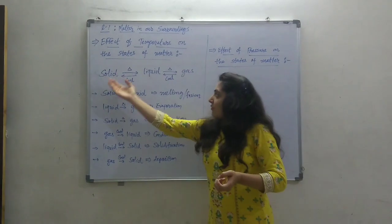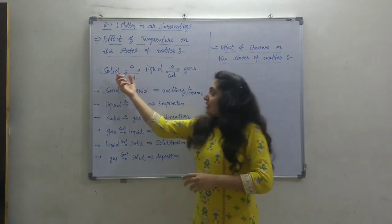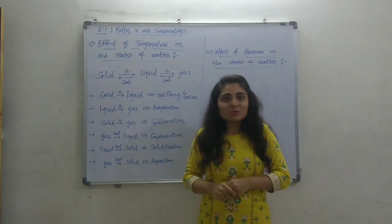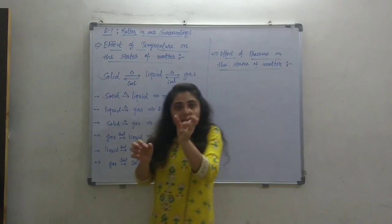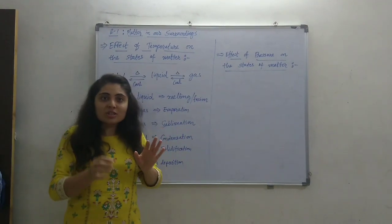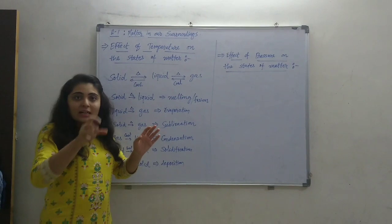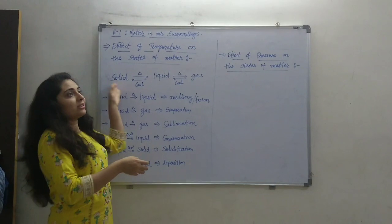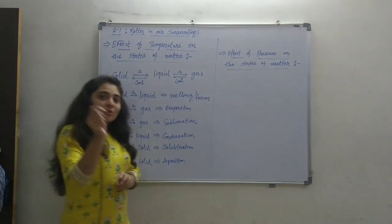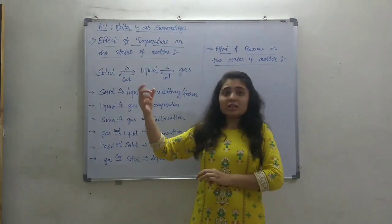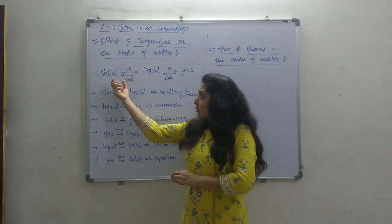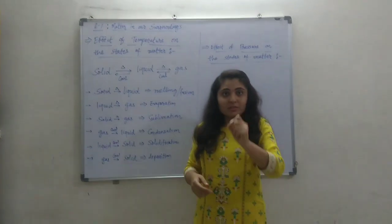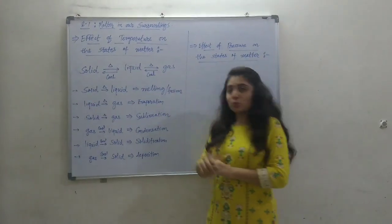Similarly, when solid is converting into liquid at the melting point, the temperature becomes constant, and some amount of heat is utilized to convert all particles of solid to liquid. The amount of heat utilized to convert solid to liquid at the melting point is called the latent heat of fusion.